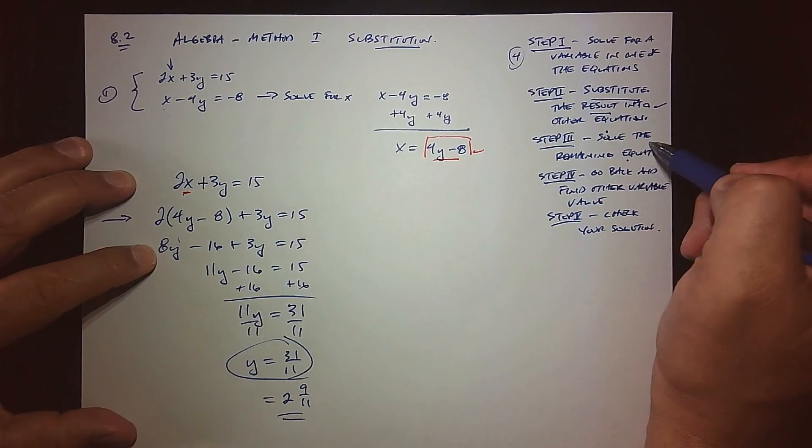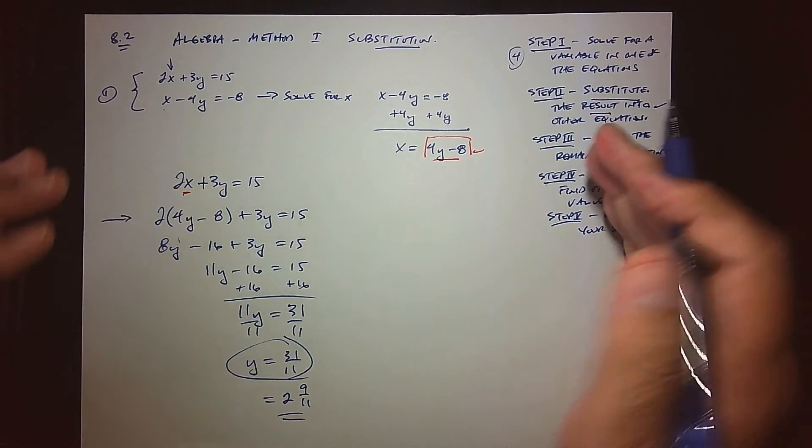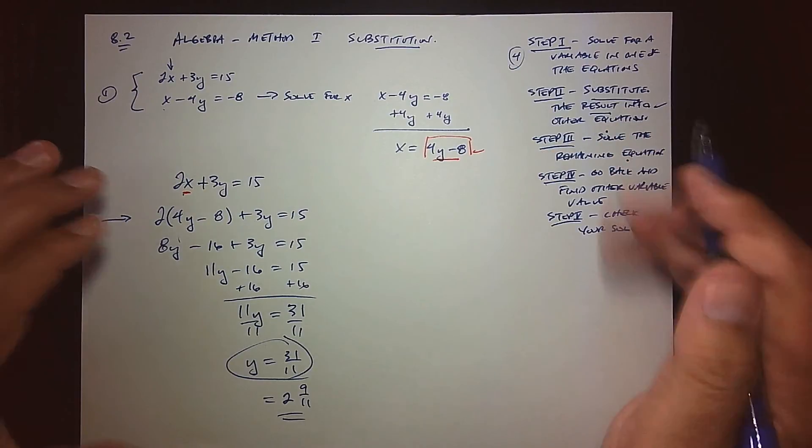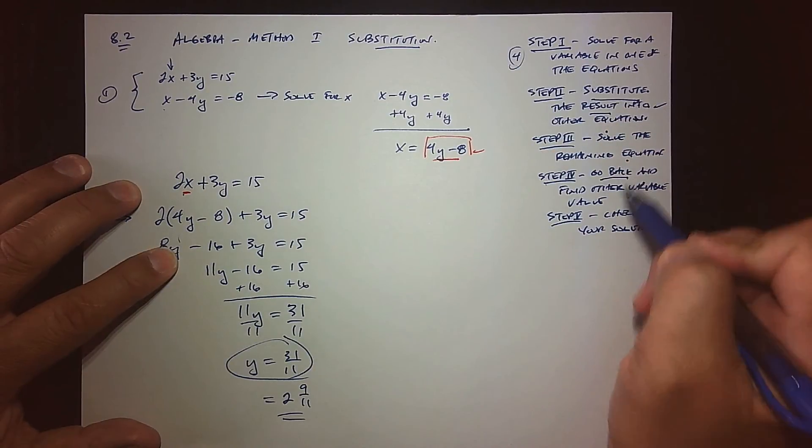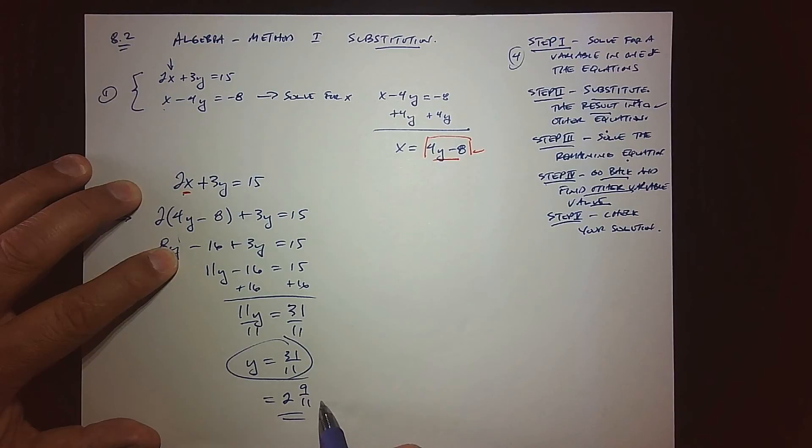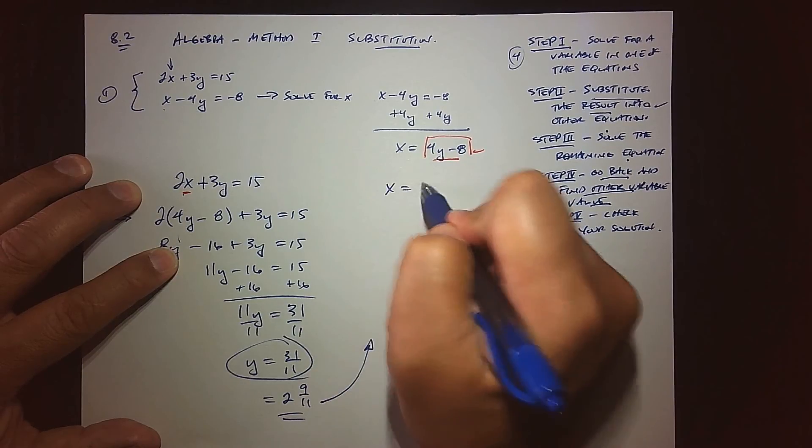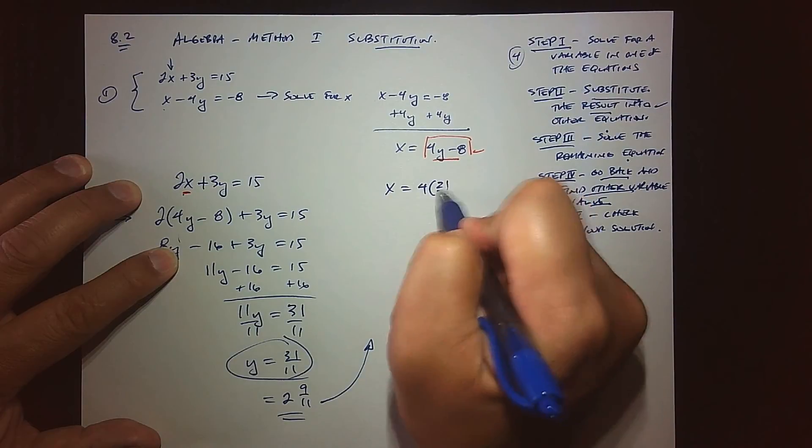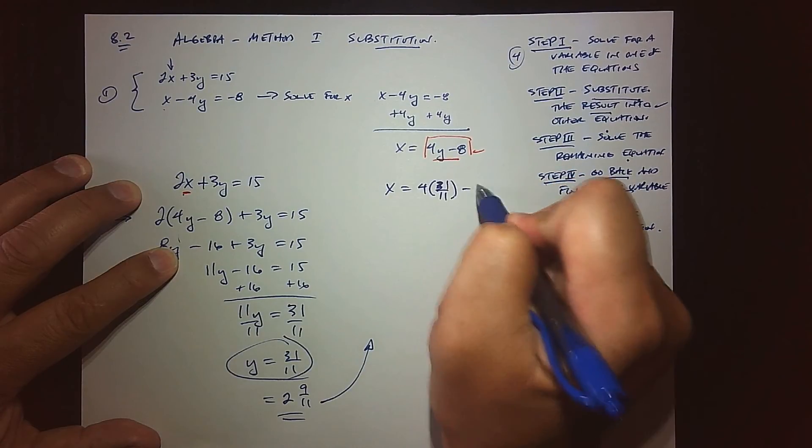There's step 3. Now we have to do—remember we're finding an ordered pair, there's an x and a y. What you want to do next is go back and find the other variable. Now that I know what y is, I can go up to here and replace that y.